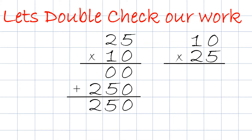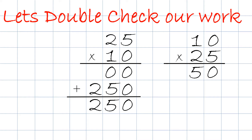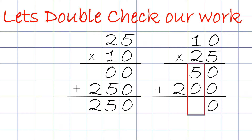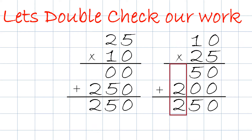We take 0 times 5 which will be 0, then 5 times 1 which will be 5. We put the 0 right up here, then 2 times 0 which will be 0, and 2 times 1 will be 2. We add them up starting with the right column: 0 plus 0 equals 0, 5 plus 0 equals 5, nothing plus 2 equals 2. The answer is 250, so they do match.